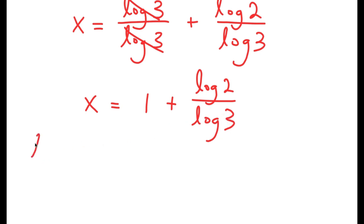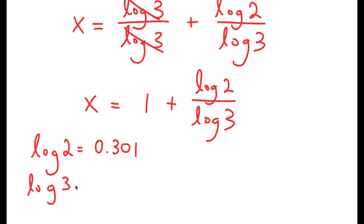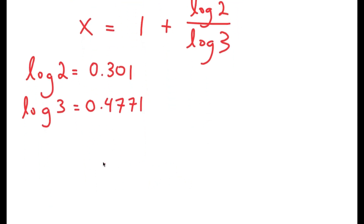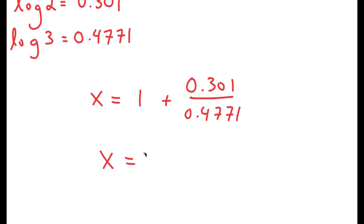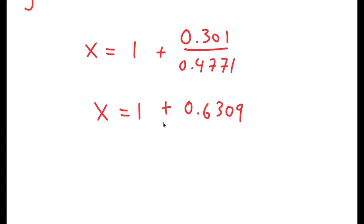Now, log of 2 is equal to 0.301 and log of 3 is equal to 0.4771. So I get x is equal to 1 plus 0.301 over 0.4771. And 0.301 over 0.4771 is 0.6309. So I have x is equal to 1 plus 0.6309, which is equal to 1.6309. This is my solution.